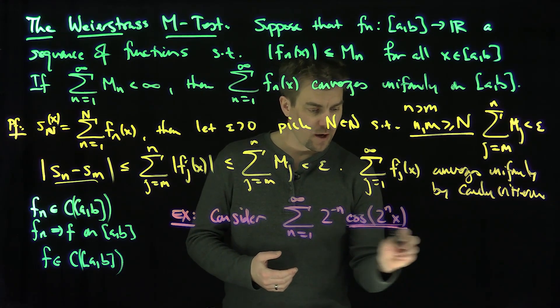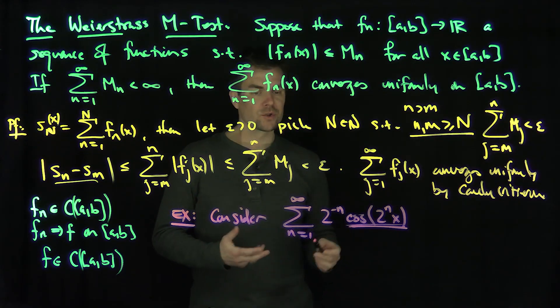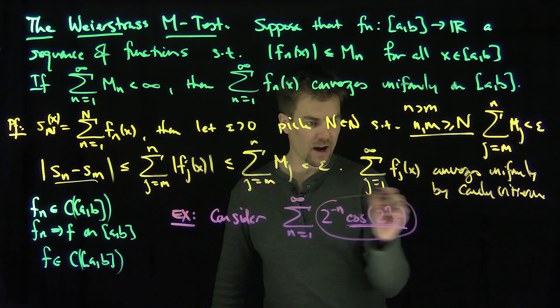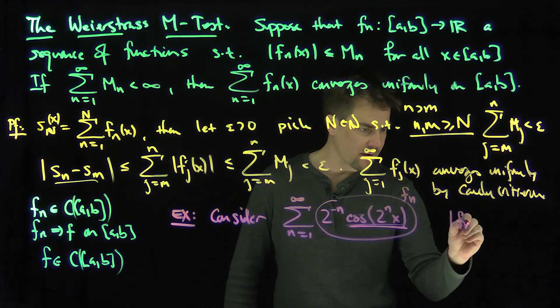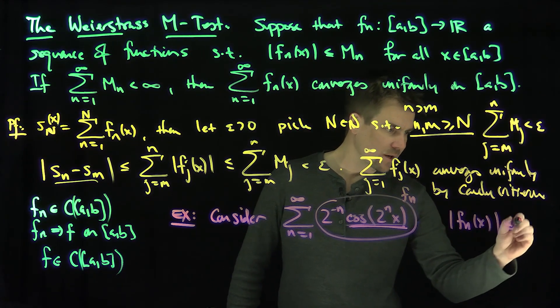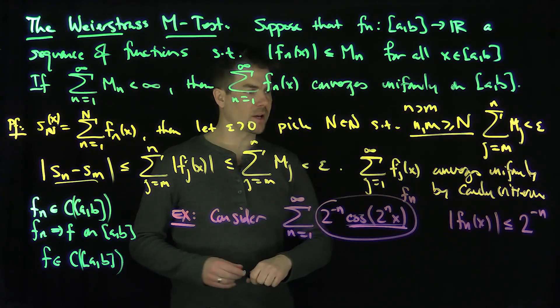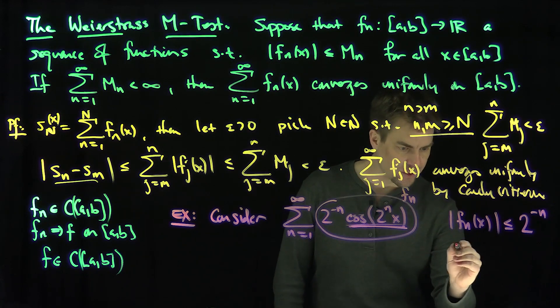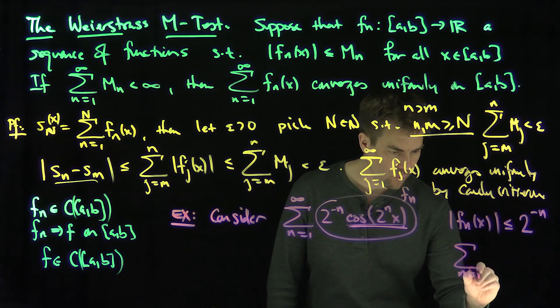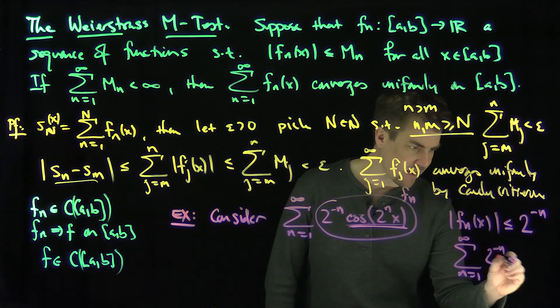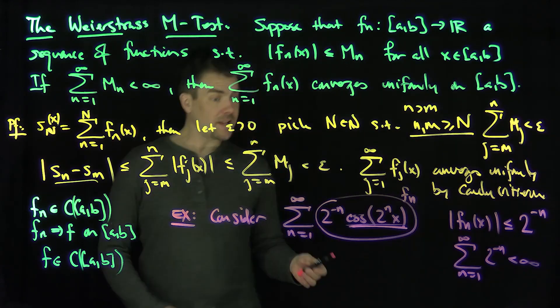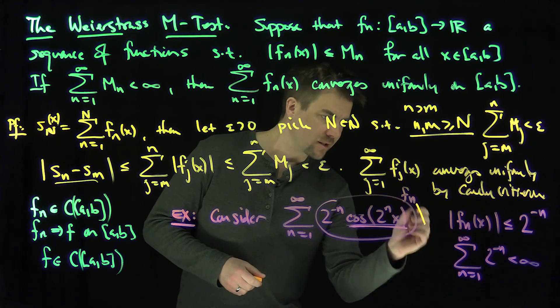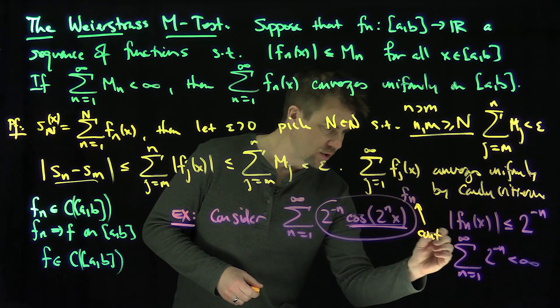But the modulus of the cosine is less than or equal to 1. So if we call these functions f_n, then |f_n(x)| is less than or equal to 2^(-n), because the biggest that cosine can be is just 1. And I know that the sum from n=1 to infinity of 2^(-n) is convergent. Therefore, and each of these individual functions are continuous.